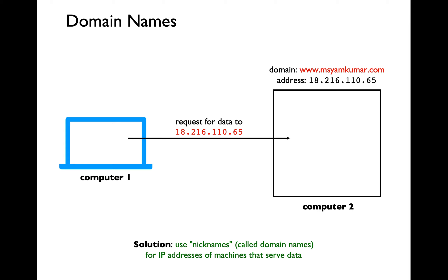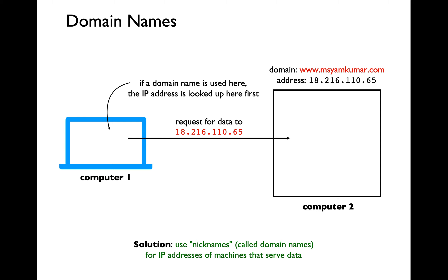Here is an example of a domain name. Every time you access the course website, you are accessing a domain called www.mshamkumar.com. Domain Name Servers — DNS in short — enable you to look up a specific domain name and find the corresponding IP address for that particular domain name. Once you have the IP address, you should be able to send a request to that particular IP address representing the remote machine.